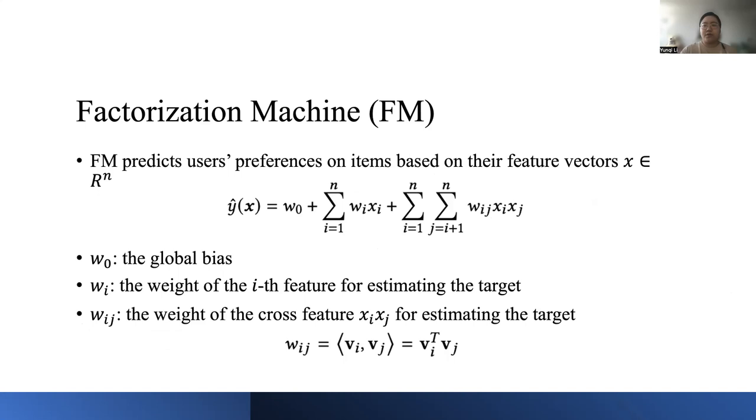Let's first introduce factorization machine. Factorization machines are supervised learning models which are widely used for feature-based collaborative recommendation. We will call factorization machine as FM in this presentation. FMs predict users' preference on items based on their feature vectors x, here x is a given real-valued feature vector with n features. FMs estimate the target variable by modeling all features as well as the second-order interactions between each pair of features. A general formulation for FMs is shown as an equation here.